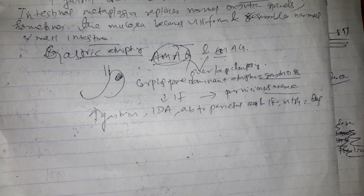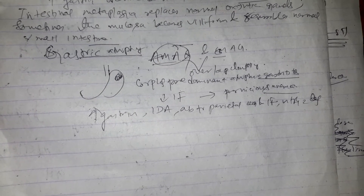Patients with AMAG have increased risk of gastric neuroendocrine tumors and gastric adenocarcinoma. In contrast to AMAG, fasting serum gastrin levels are not markedly elevated in environmental metaplastic atrophic gastritis, and autoantibodies to parietal cells and intrinsic factor and pernicious anemia are absent in environmental metaplastic atrophic gastritis.